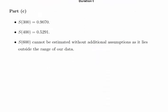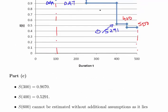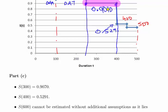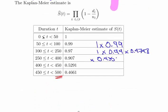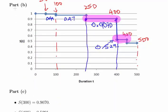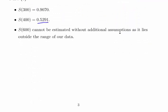For the probability of survival at 300 hours: since this is a step function, 300 hours falls in the interval between 250 and 400, so the estimate is 0.9070. For 400 hours, we read off 0.5291. For 600 hours, no estimate can be made without additional assumptions, as 600 hours lies outside the range of the experiment which only extends to 500 hours.